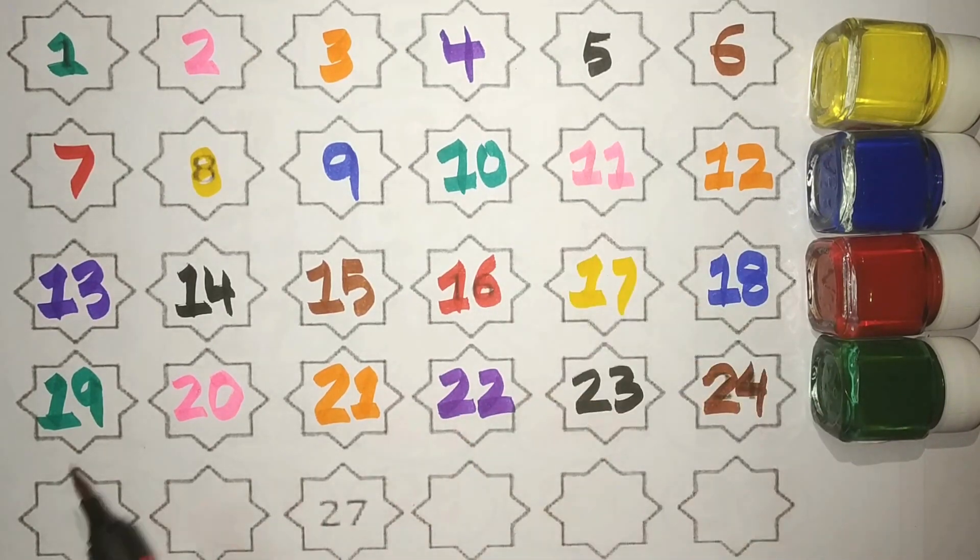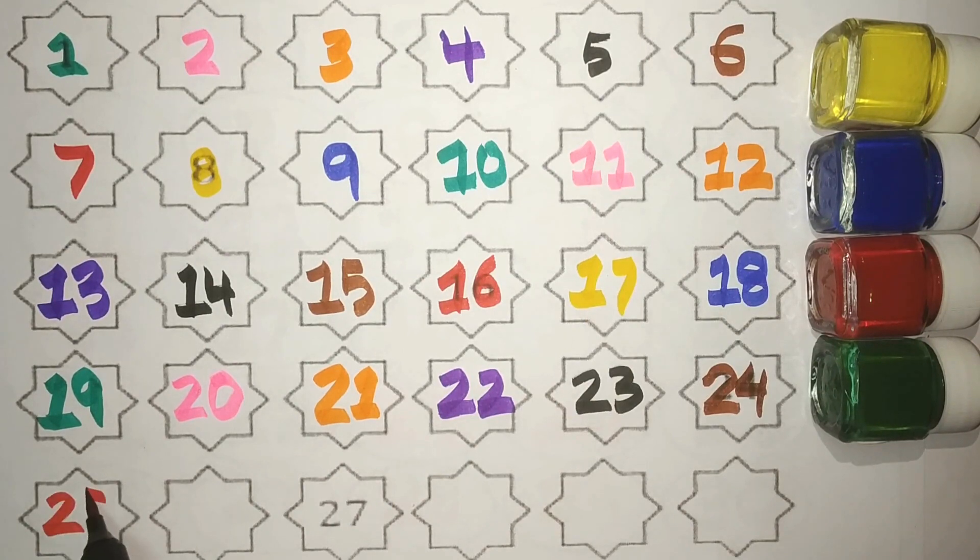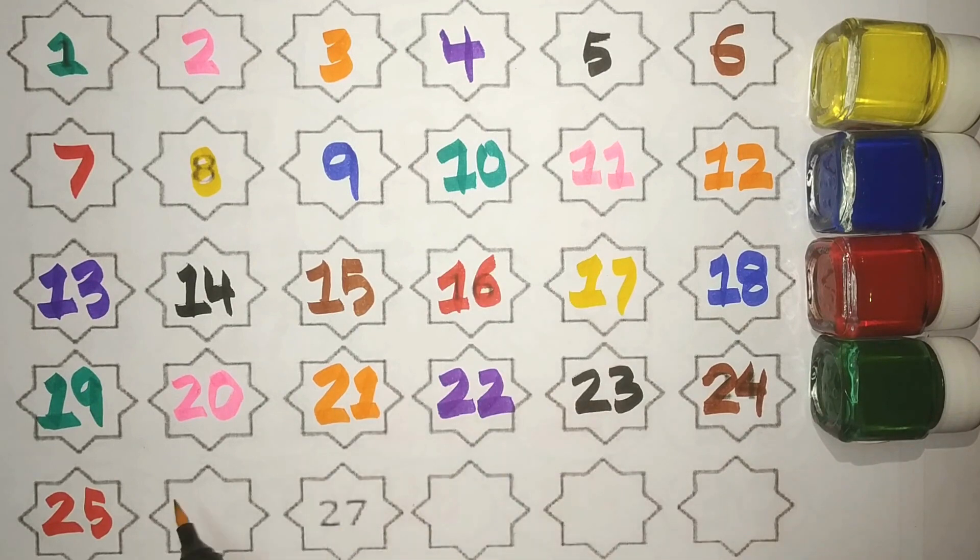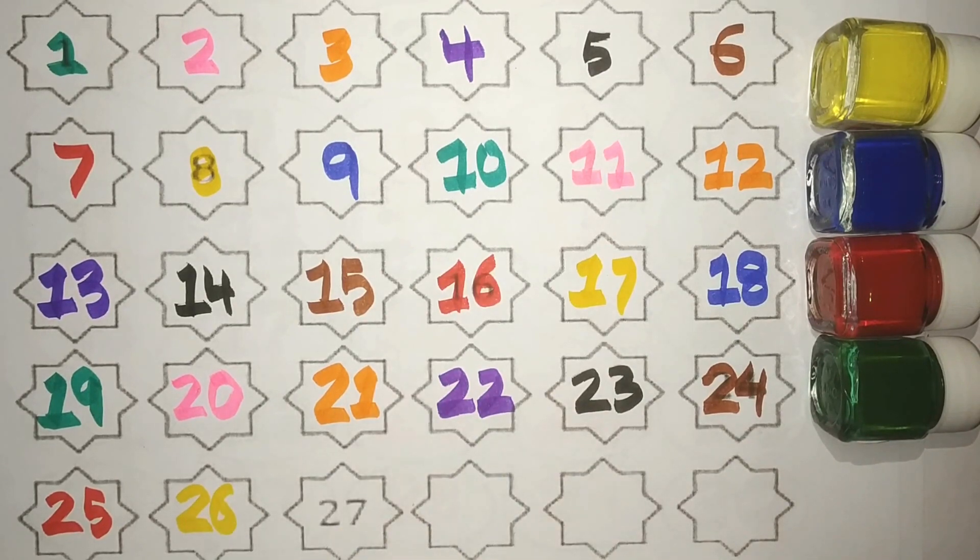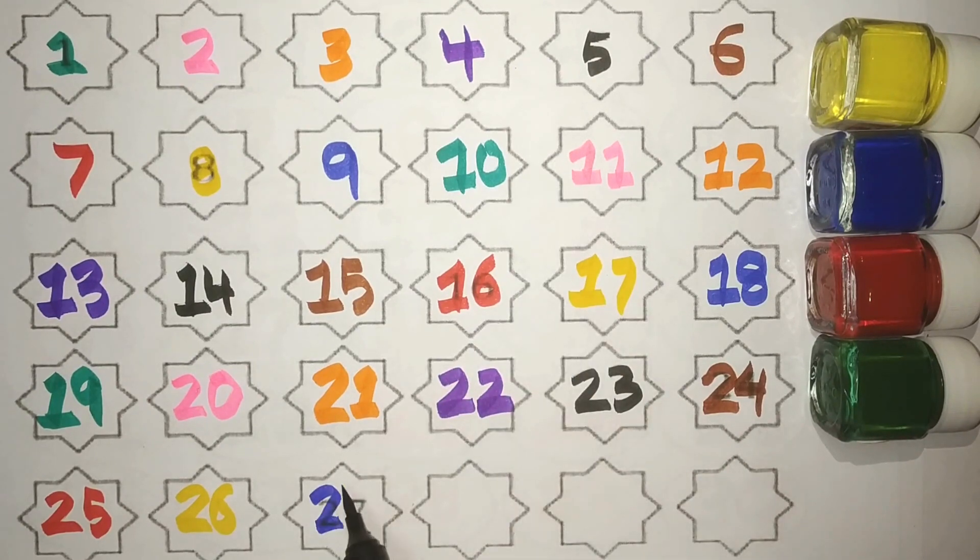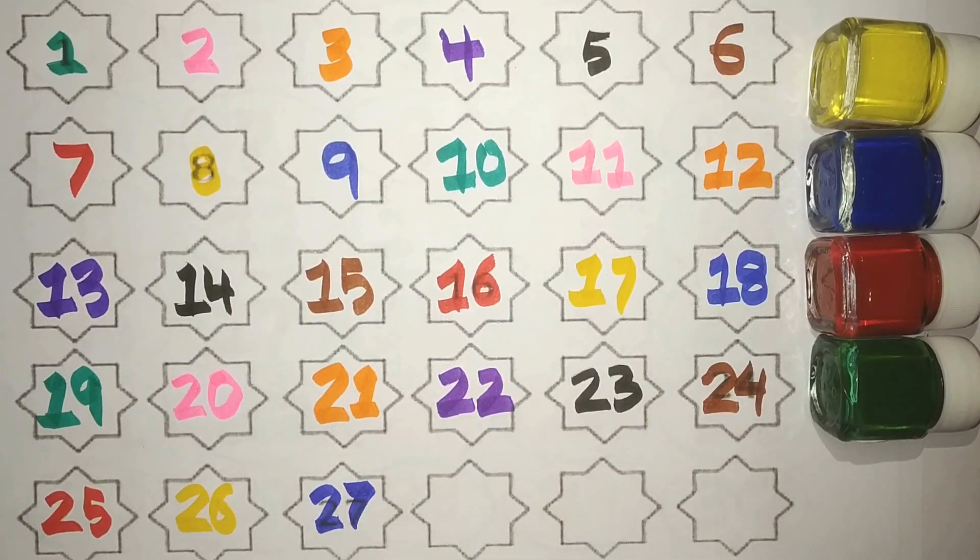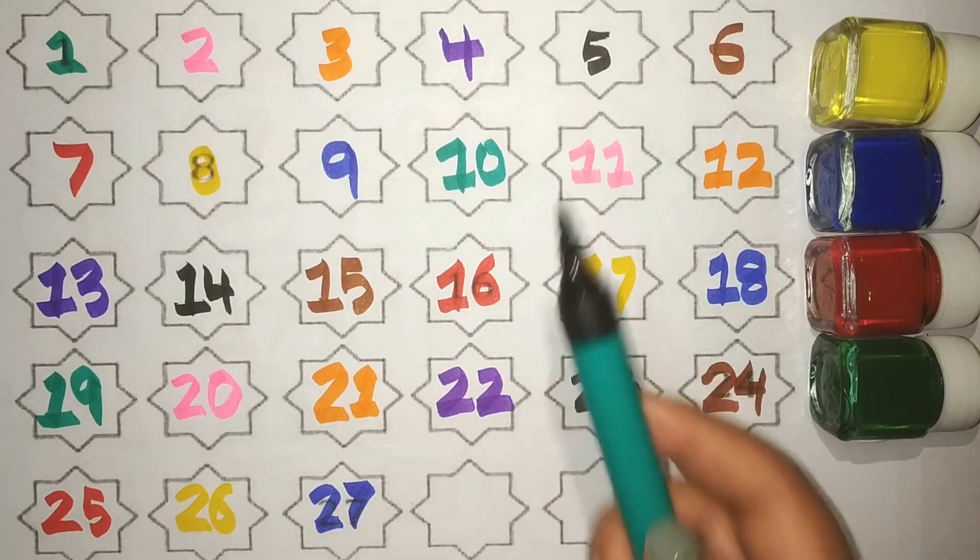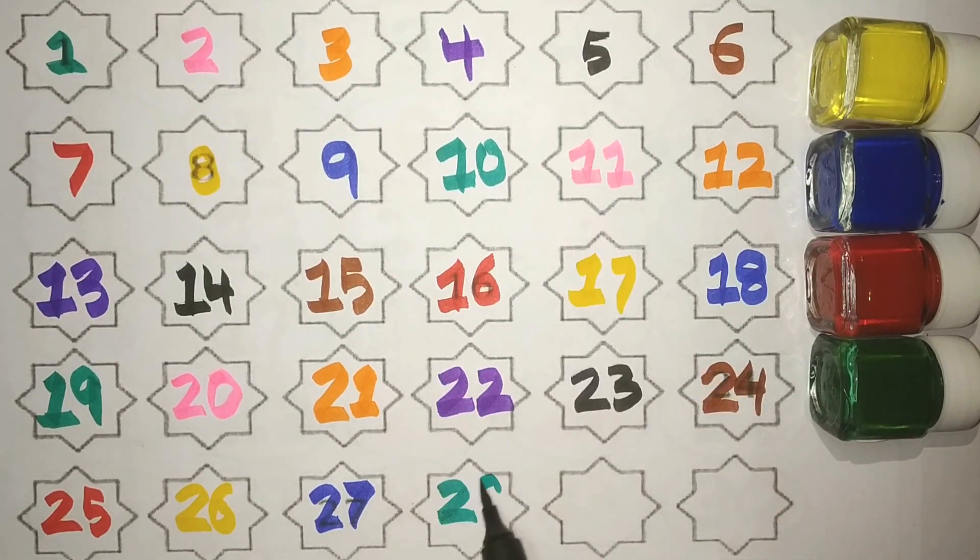Red 2, 5, 25, Yellow 2, 6, 26, Blue 2, 7, 27, Green 2, 8, 28.